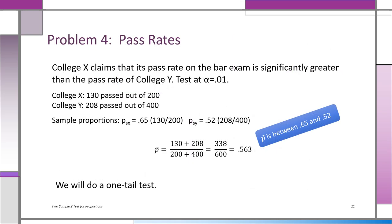Here we go again, but this one's a little different. Pass rates: College X claims that its pass rate on the bar exam is significantly greater than the pass rate of College Y on the bar exam. We want to use a significance level alpha of 0.01 for this test.